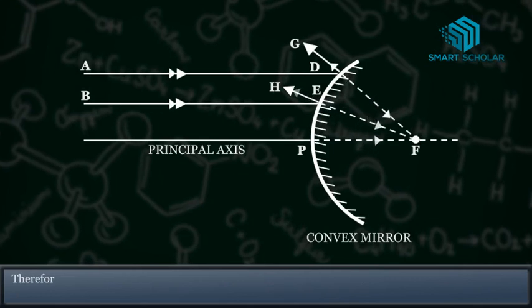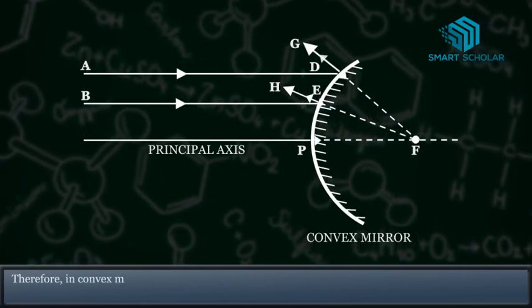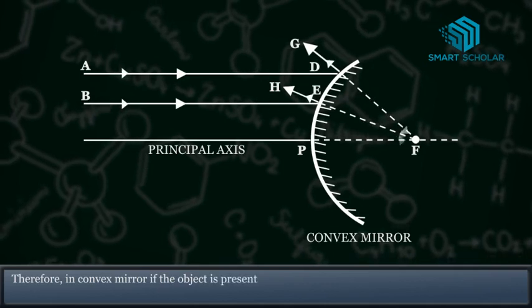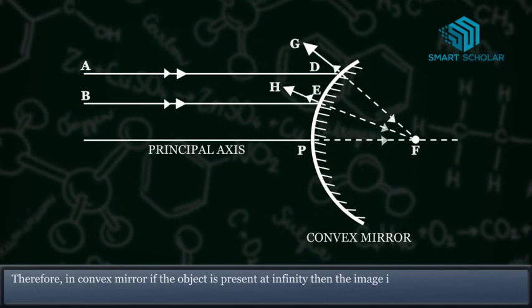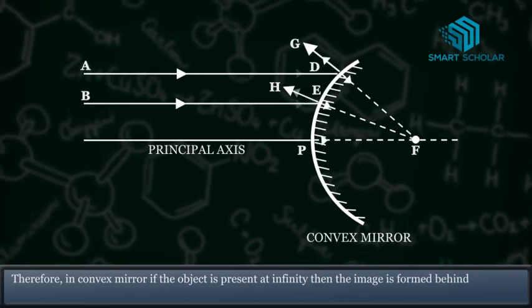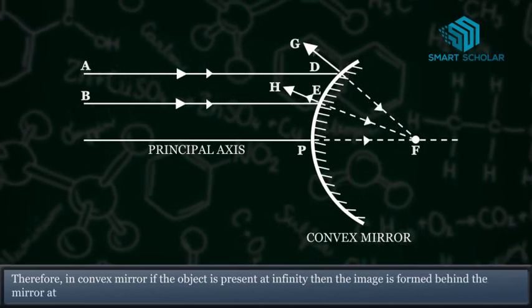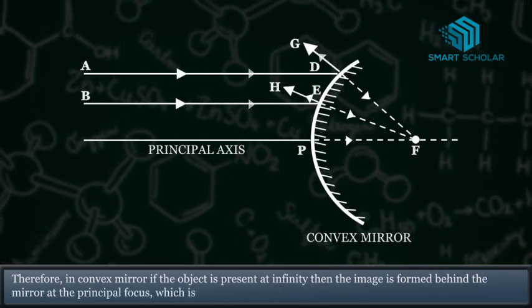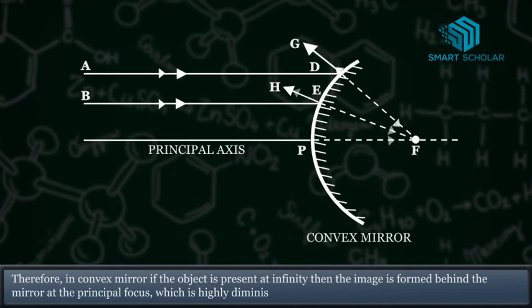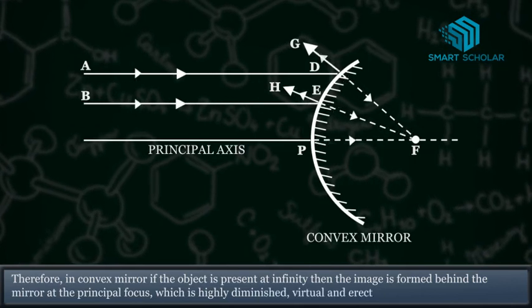Therefore, in a convex mirror, if the object is present at infinity, the image is formed behind the mirror at the principal focus, which is highly diminished, virtual, and erect. The image formed is at the focus, extremely diminished, virtual, and erect.